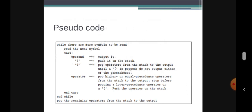The pseudocode: while there are more symbols to be read, read the next symbol and use a switch case. Case operand: output it. Case left parenthesis: push it on the stack. Case right parenthesis: pop operators from the stack to the output until a left parenthesis is popped — do not output either parenthesis. Case operator: pop higher or equal precedence operators from the stack to the output, stop before popping a lower precedence operator or a left parenthesis, then push the operator on the stack. End case, end while, then pop all remaining operators from the stack to the output.